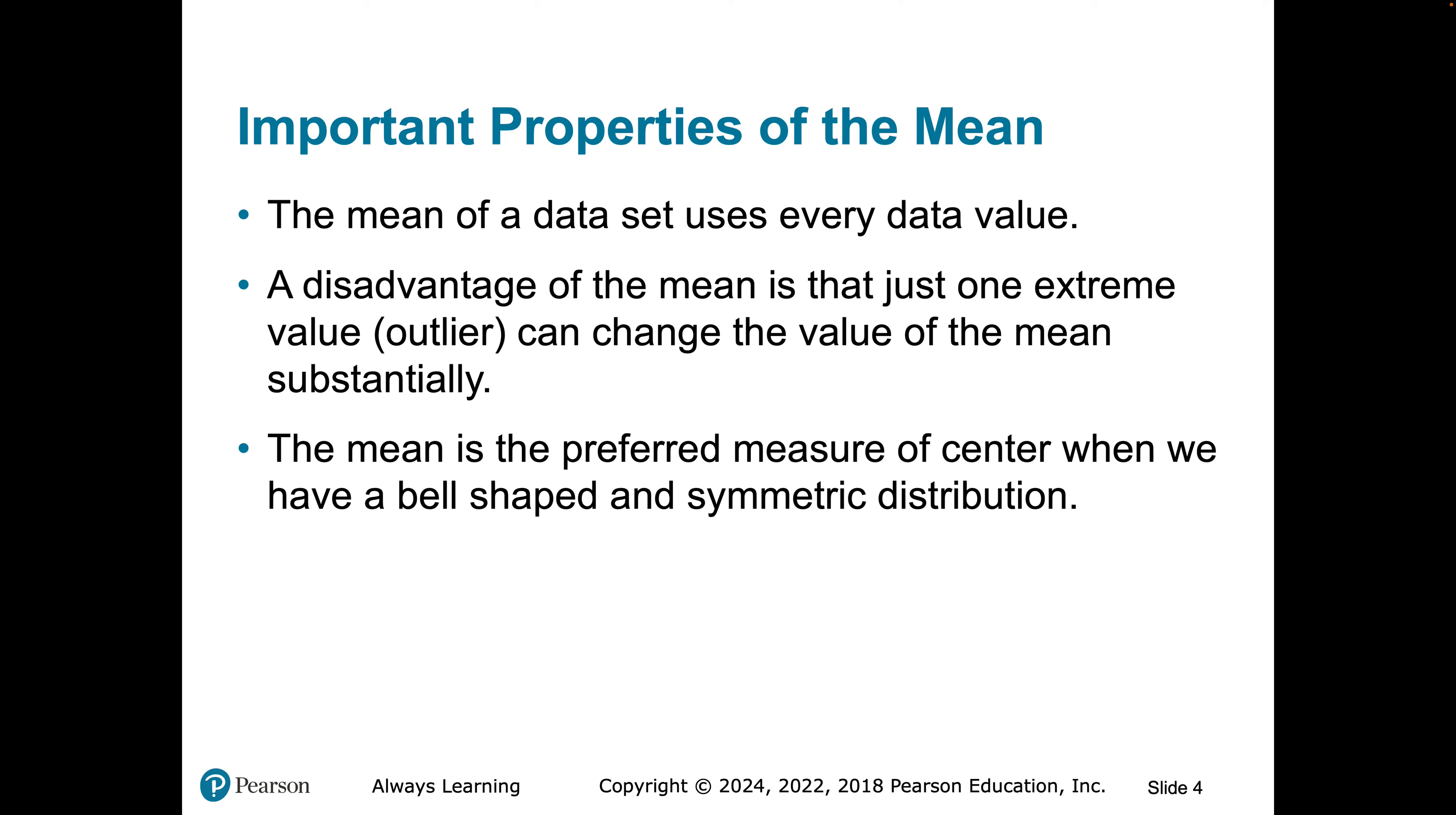Why is the mean valuable? Well, first of all, it uses every single data in our data set. The disadvantage to the mean is that one extreme value can change the value of the mean significantly. So if you have an outlier, an unusually high or unusually low value relative to the rest of the distribution, it can artificially inflate the value of the mean. And the third bullet there, the mean is the preferred measure of center when we have a bell-shaped and symmetric distribution.